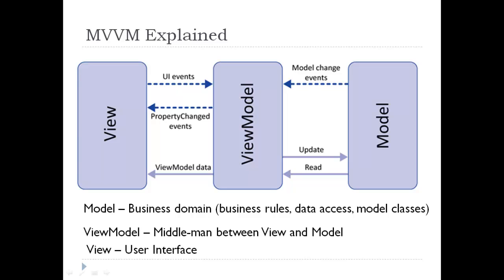In MVVM, the view is active as opposed to a passive view which has no knowledge of the model and is completely manipulated by a controller or presenter. The view in MVVM contains behaviors, events, and data bindings that ultimately require knowledge of the underlying model and view model. While these events and behaviors might be mapped to properties, method calls, and commands, the view is still responsible for handling its own events and does not turn this completely over to the view model.